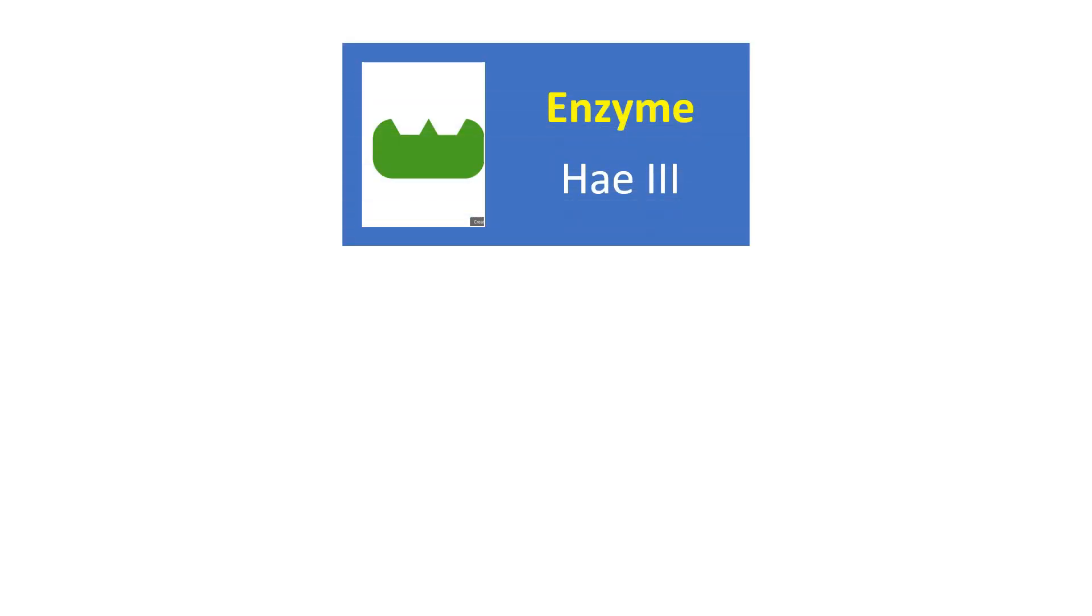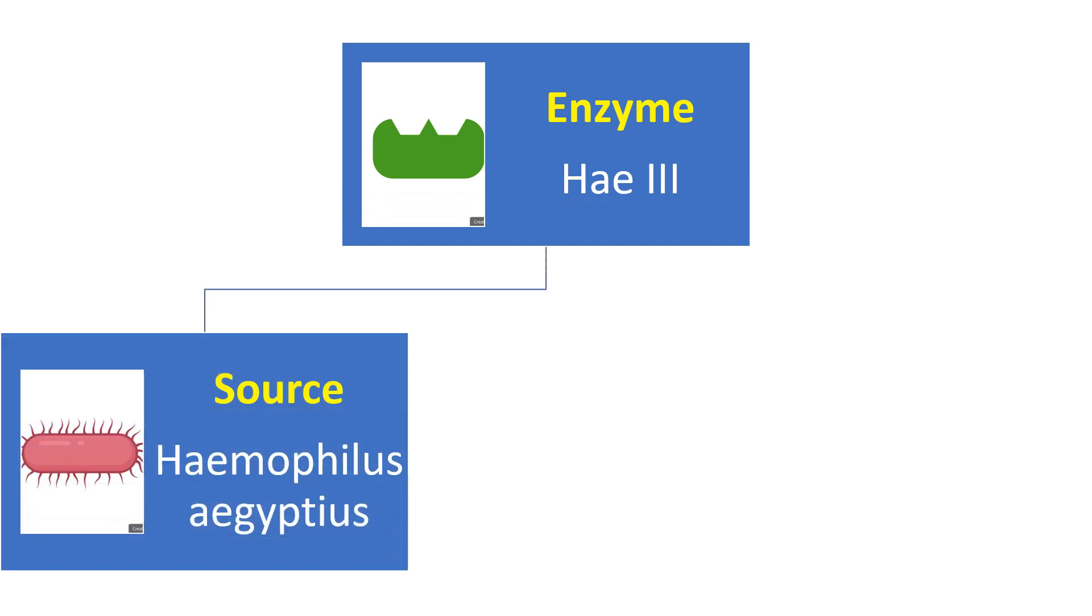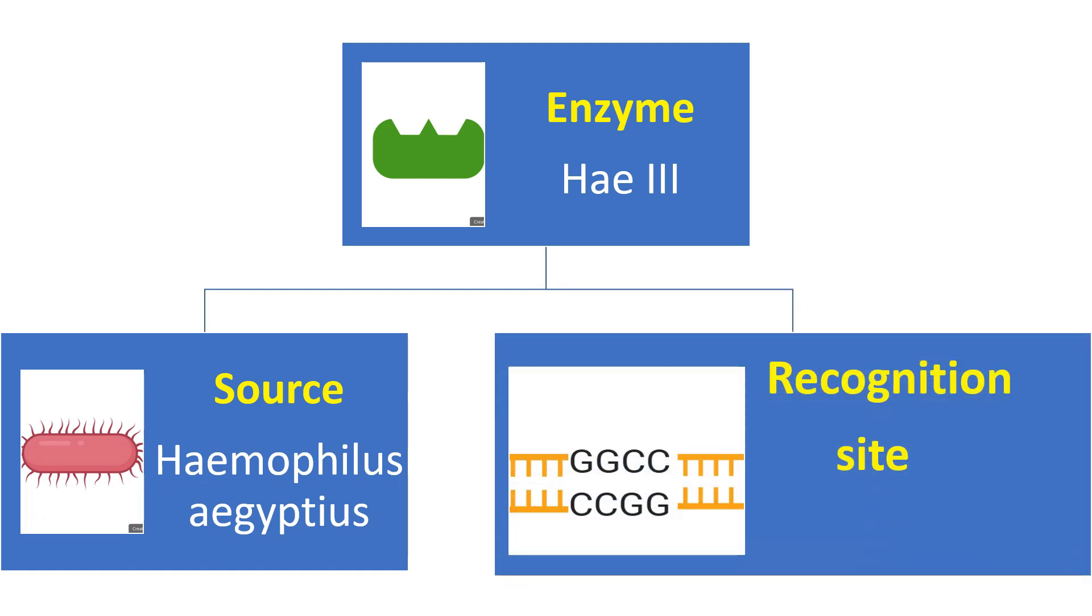Here we show you some examples of restriction enzymes and their restriction sites. PI3 is a restriction enzyme extracted from bacteria Haemophilus aegyptus. Its restriction site in the DNA molecule is GGCC, and it cleaves between G and C on both sides.